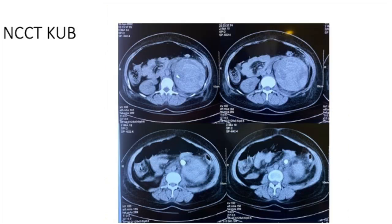In the subsequent NCCT-KUB films, you can also notice a large upper ureteric stone which is impacted. The obstruction secondary to this stone likely led to a fornicial rupture and subsequent bleeding into the subcapsular space, leading to this hematoma formation.